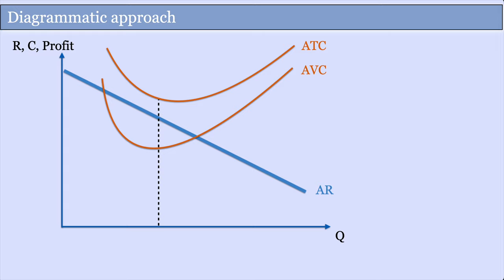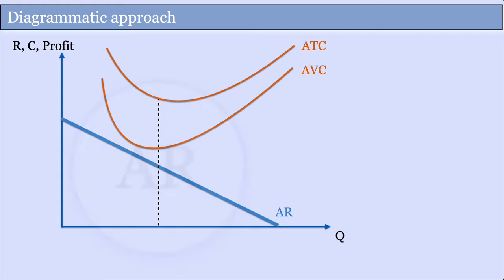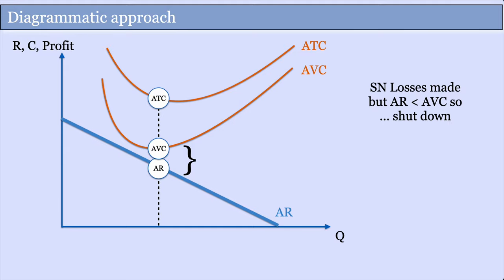Looking at a diagram with average total cost and average variable cost curves at a particular output level: if average revenue is below average total cost, you're making a supernormal loss. But if average revenue is still above average variable cost, you should stay open because you're making a positive contribution. In the second situation, where average revenue is below average variable cost, you're not making a positive contribution and should shut down in the short run.